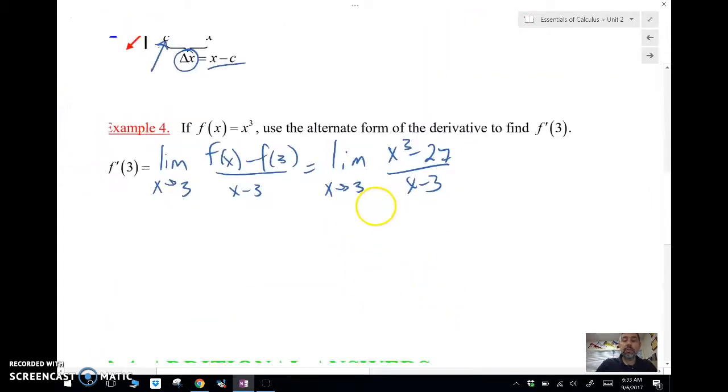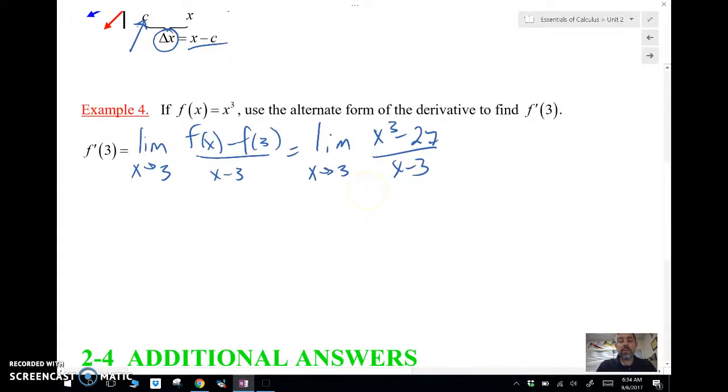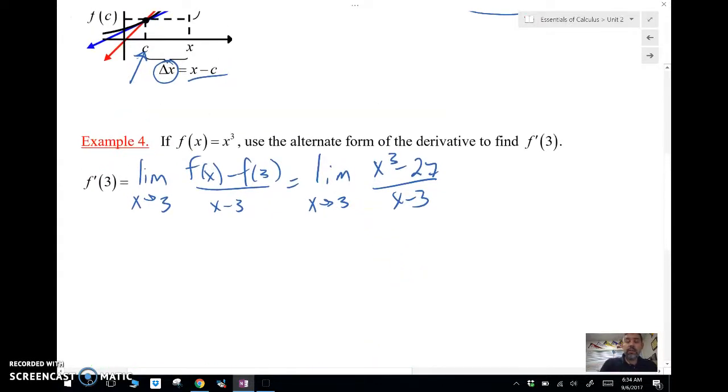We can either use what we call the difference of two cubes, or we can just do some long division. If you don't remember the difference of two cubes, we'll do a little bit of long division here. So, we're doing x cubed minus 27.